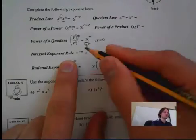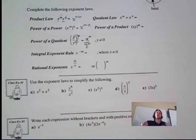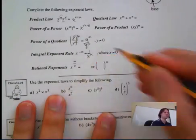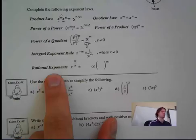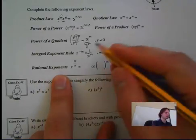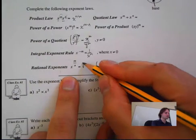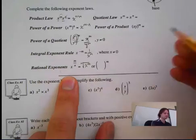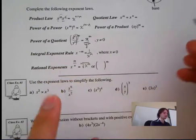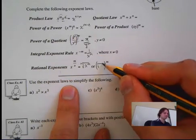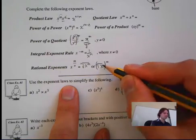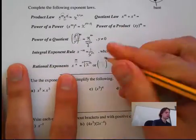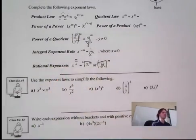Next one is the integral rule — this is just, you flip it over. So that one is 1 over x to the m. And the next one is rational exponents, which is the same thing as the root. We have the n there — the nth root of x to the m — so it looks like that with the n on the outside.